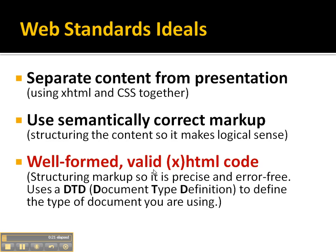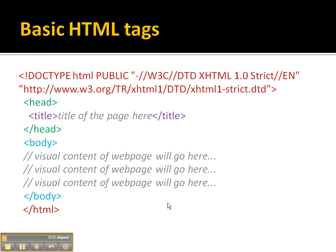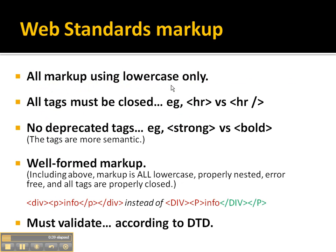If we take a look at some basic code, here's where we've changed the very top — it used to say just HTML, and we've changed this to a document type, a DTD, which says that we're going to be using a strict XHTML document. This particular document has rules for the way that it's coded.